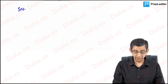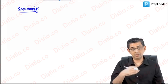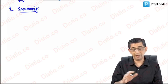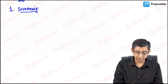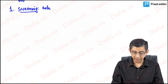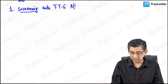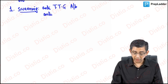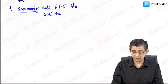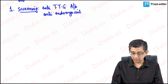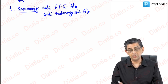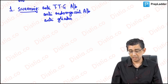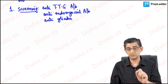To diagnose celiac sprue, we first request an anti-TTG antibody (anti-tissue transglutaminase antibody). Alternative antibodies include anti-endomyseal antibody and anti-gliadin antibody, but the anti-TTG antibody titer is the single best response in MCQs.